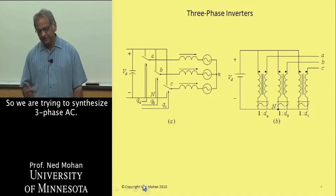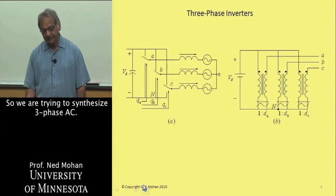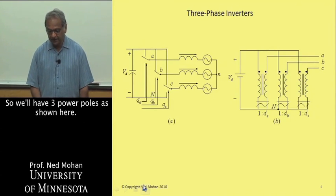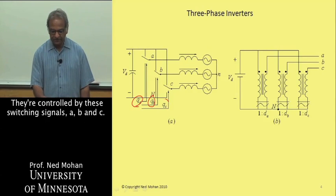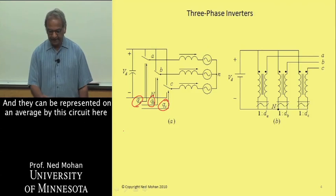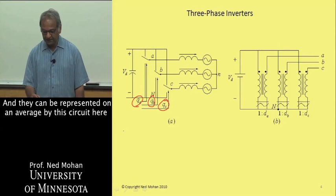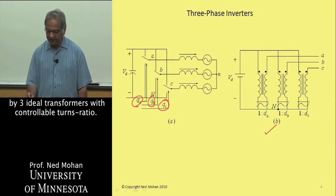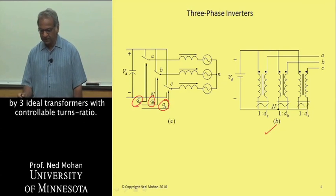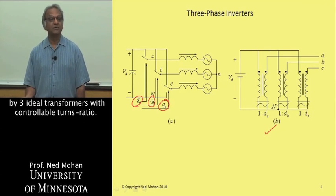We are trying to synthesize three-phase AC. We'll have three power poles as shown here, controlled by switching signals A, B, and C. They can be represented on average by this circuit, by three ideal transformers with controllable turns ratios.